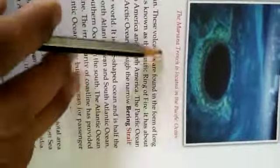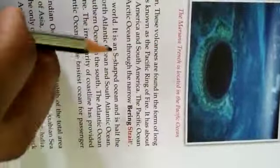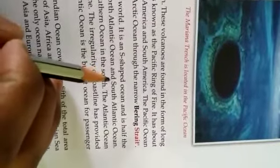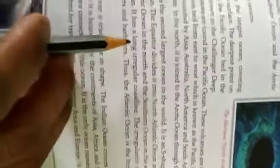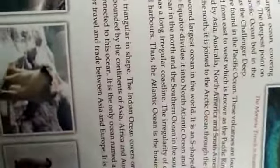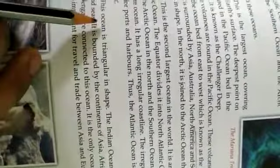Most of the active volcanoes are found in the Pacific Ocean. These volcanoes are found in the form of long chains encircling the ocean bed from east to west, which is known as Pacific Ring of Fire. It has about 450 volcanoes.